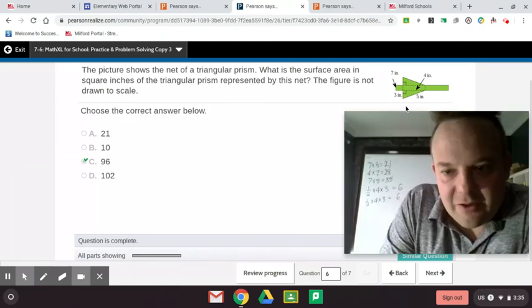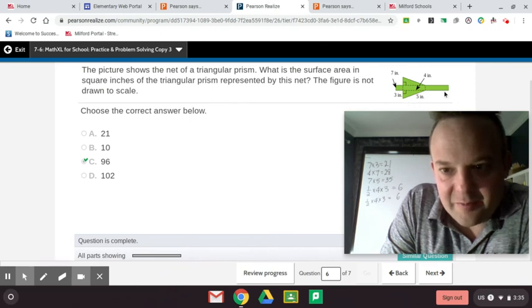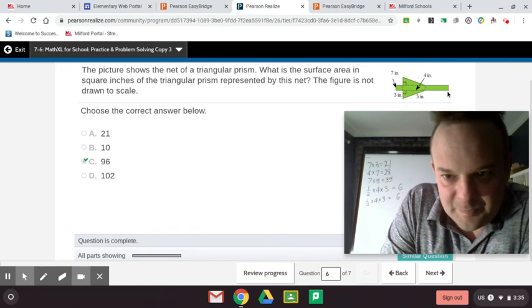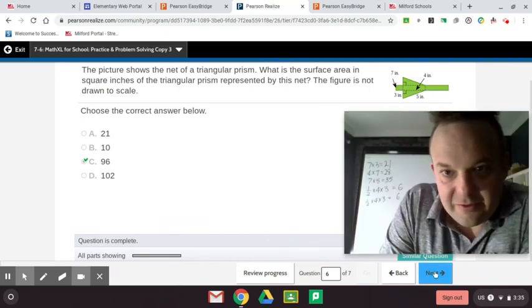Alright, so where I think you could go wrong here is this hypotenuse here, which is the longest side of the triangle, goes with that. I think a lot of people would think that is 4, but it's not. It goes right there. Alright, good luck to you.